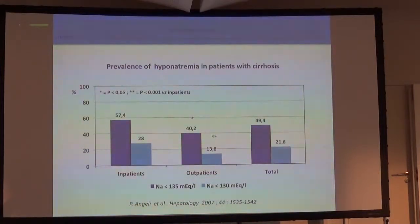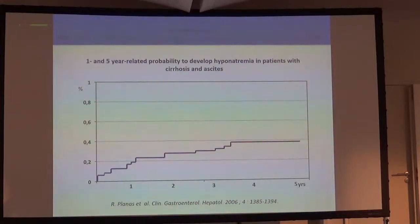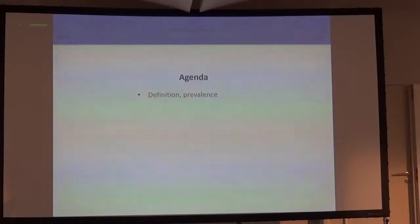What about the prevalence? In inpatients with cirrhosis, around 60%; in outpatients, around 40%; as a mean around 50%. That is a prevalence much higher than that of hyponatremia in patients with chronic heart failure, where the prevalence is reported up to 30%. The probability to develop hyponatremia in cirrhosis is 40% at one year and 37% at five years.